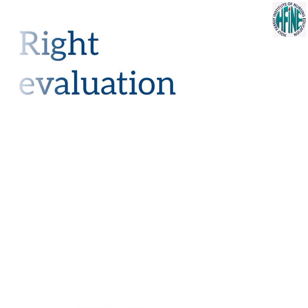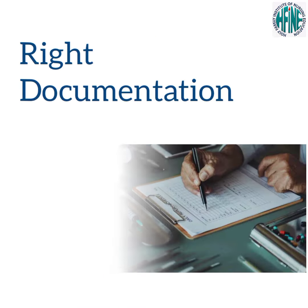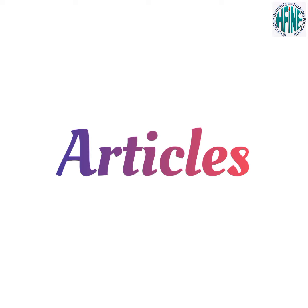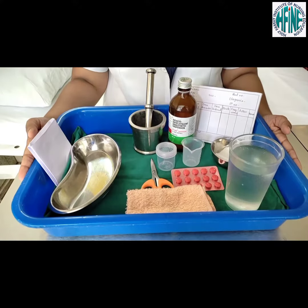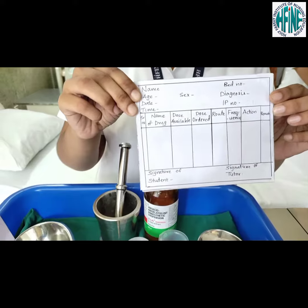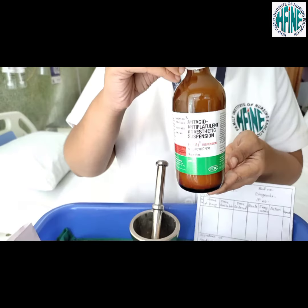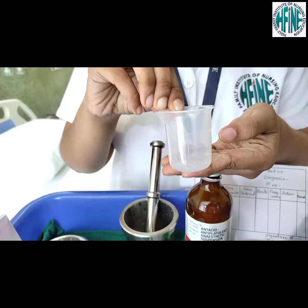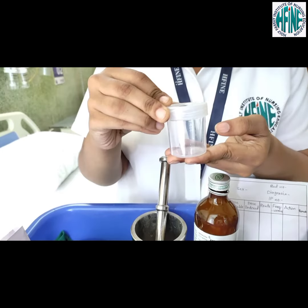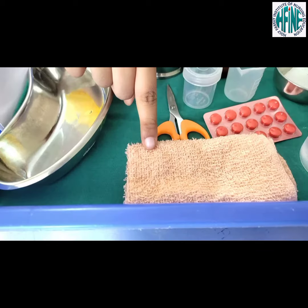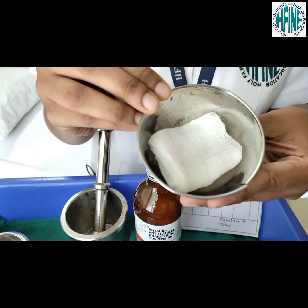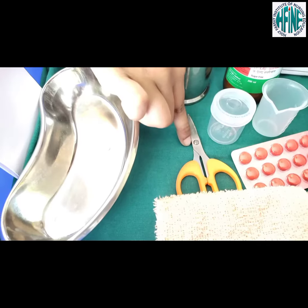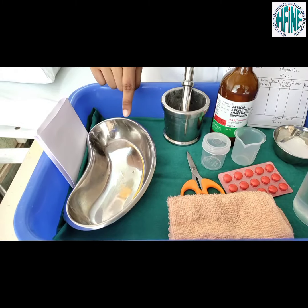Articles required: a clean tray containing medication card, tablet strip, syrup, mortar and pestle, ounce glass, medication container, glass of water, mitten bowl with gauze, scissor, kidney tray, and a paper bag.